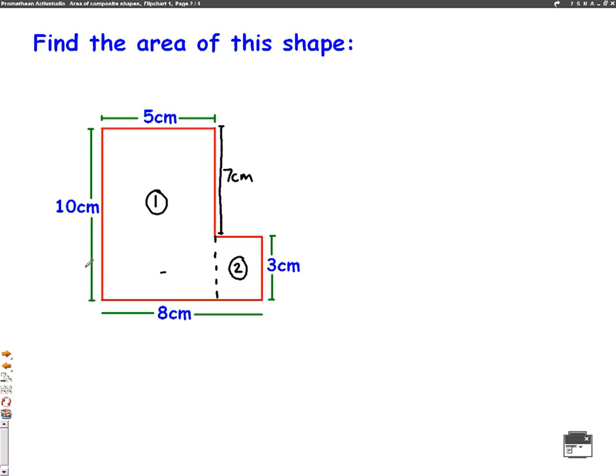We do the same with the other missing piece, this part here. The whole way across at the bottom is 8 centimetres. And we know up to here is 5 centimetres. So what is left? Well 3 centimetres is left. Because 8 take away 5 will give me 3 centimetres.